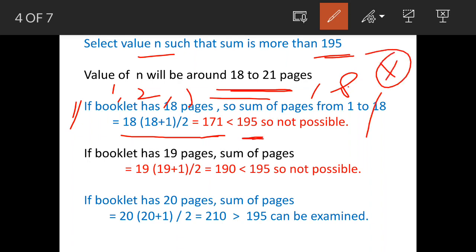Now let us try with 19. So when you put 19 as a value, you are getting total is 190 which is again less than 195, so this is also not possible. Now suppose that booklet has 20 pages, so put up the value of n as 20 and we get 210 which is greater than 195, so we can try this.